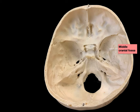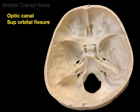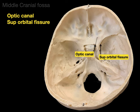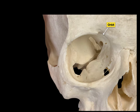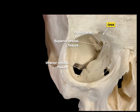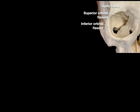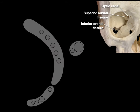Now let's go to the middle cranial fossa. Two key structures here are the optic canal and the superior orbital fissure — the optic canal goes into the orbit one way, the superior orbital fissure goes into the orbit another way. For a better view, let's look at the orbit from an anterior view. Here's the right orbit, with the optic canal, the superior orbital fissure, and the inferior orbital fissure. Let's superimpose the schematic and blow it up to make it easier to see: optic canal, superior orbital fissure, inferior orbital fissure.